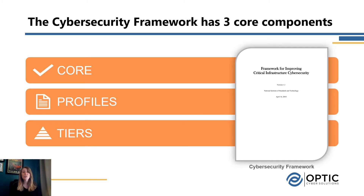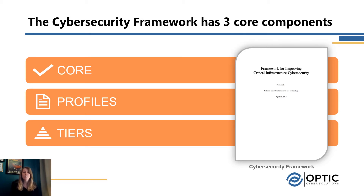The framework has three core components: the core, the profiles, and the tiers. This is similar to some of their other frameworks, like the privacy framework that was released earlier this year. When NIST was developing that, they made sure those documents would work hand-in-hand together and could be used in parallel very easily.